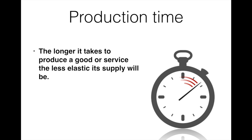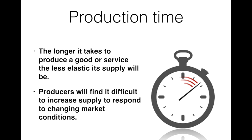If I order a custom built sports car from an Italian luxury car manufacturer, it may take a long time to build the car. In that instance, the supply of the vehicle is inelastic. In contrast, the supply of simple clothing like a basic cotton t-shirt is more elastic. It is a relatively simple process of producing the shirt and can be completed in a relatively short amount of time, resulting in more elastic supply.